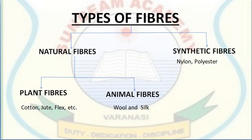The fibers used to make clothes are of different types based on their sources. There are mainly two types: natural fibers and synthetic fibers. Natural fibers are obtained from natural sources such as plants and animals, whereas synthetic fibers are made from certain chemicals by human beings. That is why synthetic fibers are also known as man-made fibers.